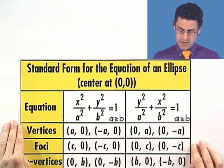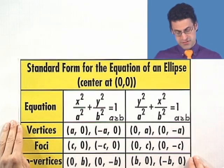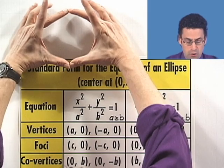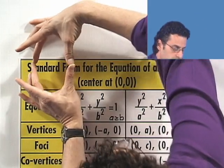So here is the standard form for the equation of an ellipse that's centered at the origin 0,0. Well, there's two possibilities if you think about it. An ellipse could be oval-shaped in this way, or the ellipse could be oval-shaped in this way.